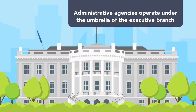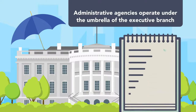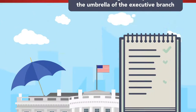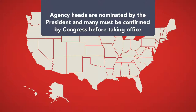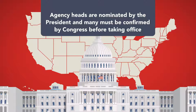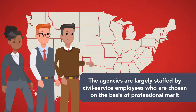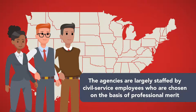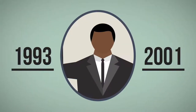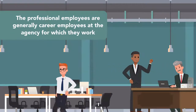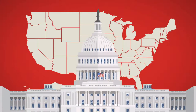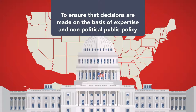While administrative agencies operate under the umbrella of the executive branch, they operate according to internal procedures. Some agencies retain a degree of independence from the executive branch, specifically from direct control by the presidential administration. While agency heads are nominated by the president, and many must be confirmed by Congress before taking office, the agencies are largely staffed by civil service employees chosen on the basis of professional merit. Unlike political appointees who may serve only for the duration of the administration that appointed them, professional employees are generally career employees. This helps insulate agency decisions from political and popular pressures to ensure that decisions are made on the basis of expertise and non-political public policy.